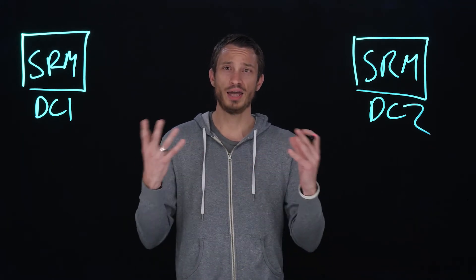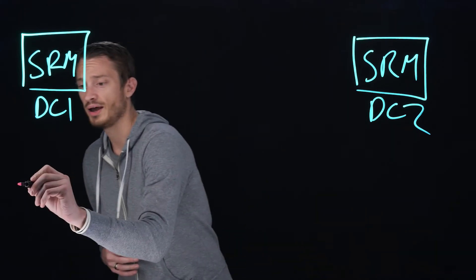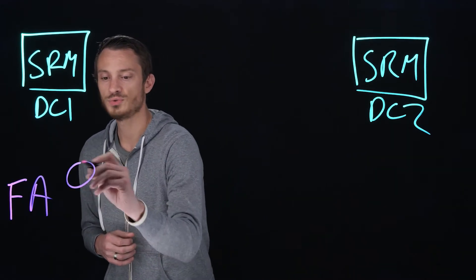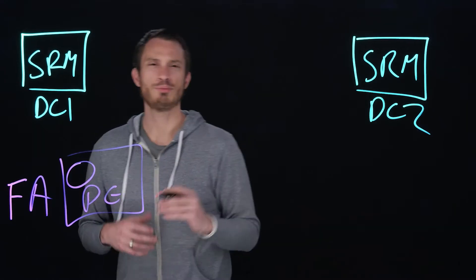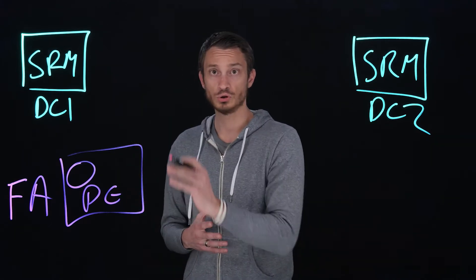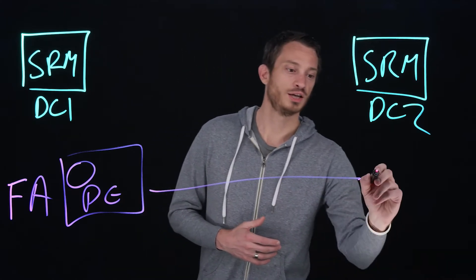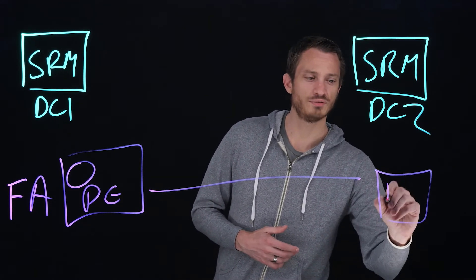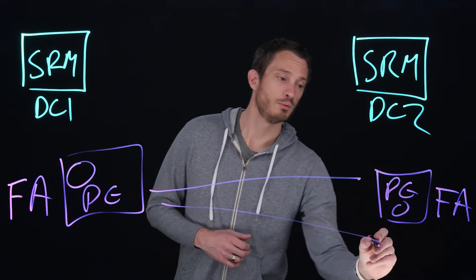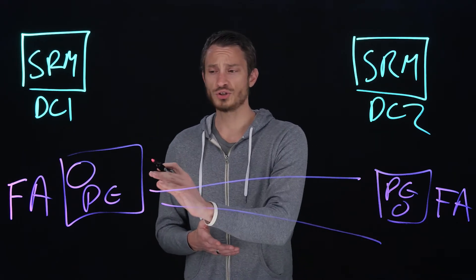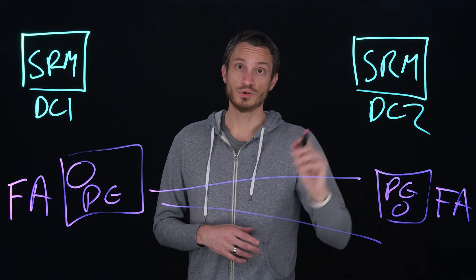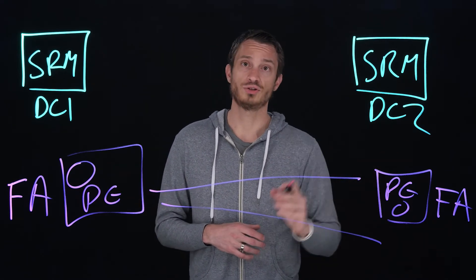The first topic I want to talk about is our asynchronous replication. When you have a flash array or multiple flash arrays, as the case in this data center, you can take your volumes and put them in what we call a protection group. A protection group is a write-consistent group that creates snapshots on an interval locally and also remotely. These snapshots can be replicated to another FA and received in another protection group on a flash array in your secondary data center or multiple flash arrays. This protection group not only has intervals and retention policies on the source side, but also different or the same retention and replication intervals on that target side.